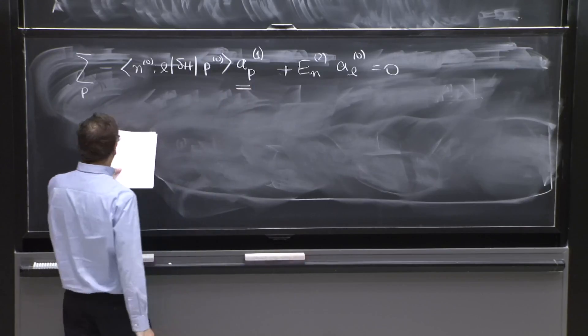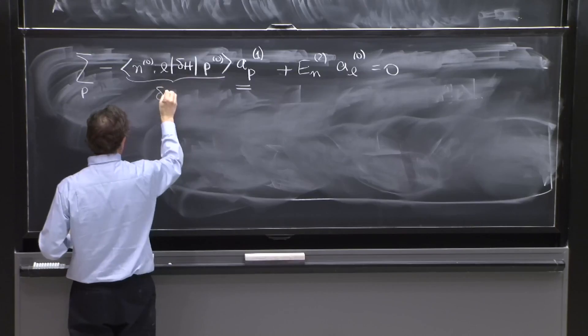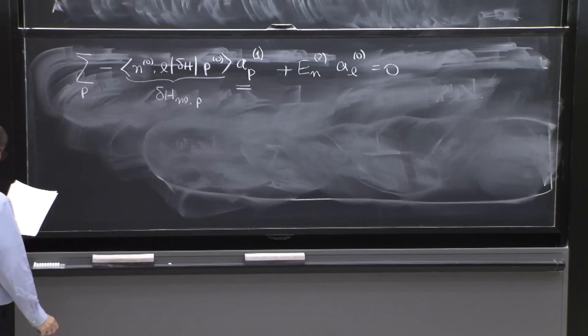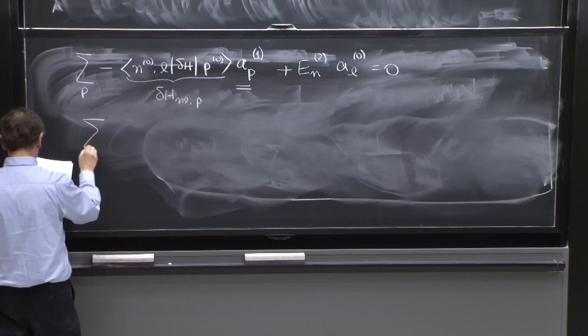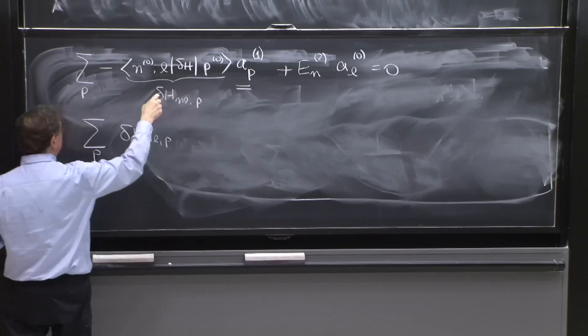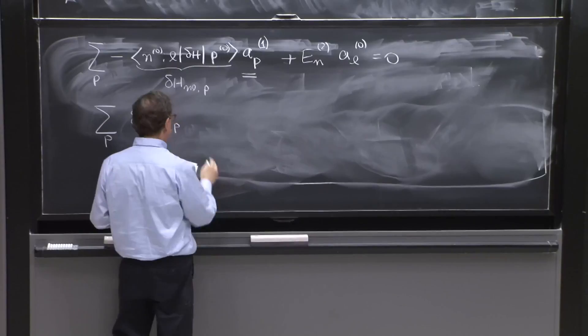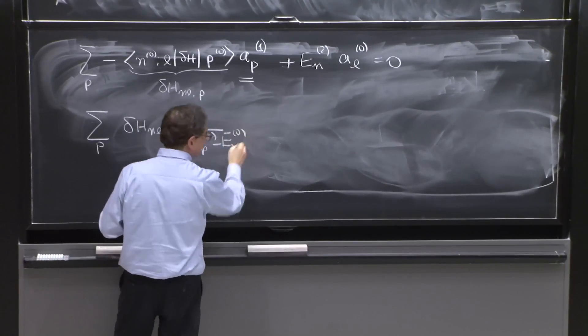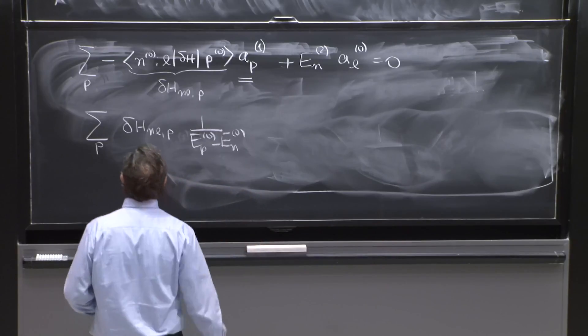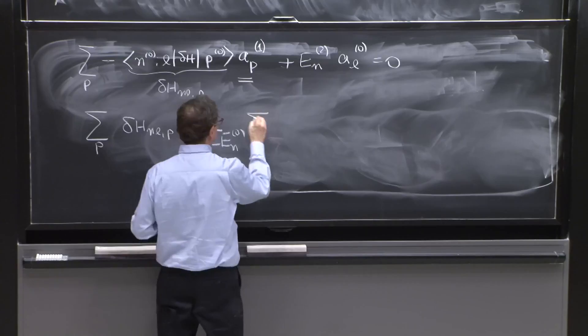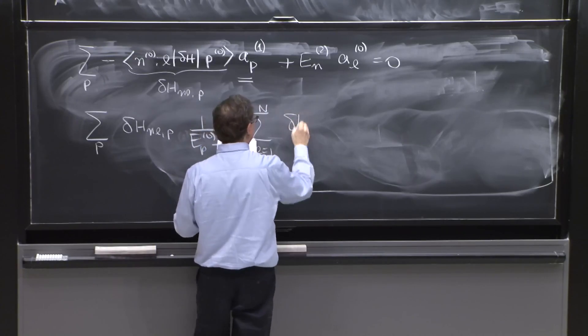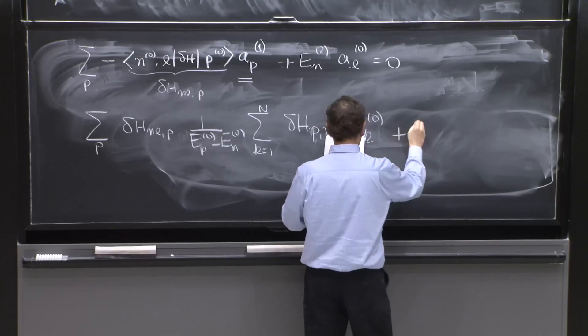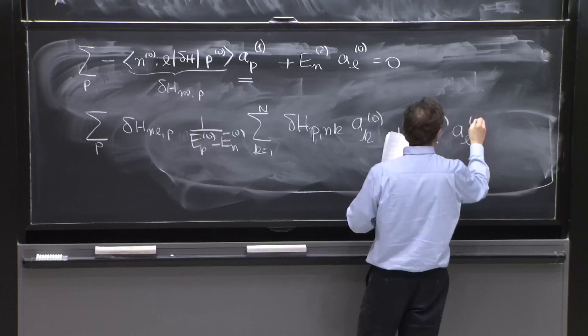So here it is. I'll copy this thing. I also can write this as delta H_nL,P. You recognize that thing. So this will be the sum over P of delta H_nL,P, the sign I will take care of it, times that thing over there, one over E_P^0 minus E_n^0. That's another minus sign that canceled this sign here. And I have here the sum over K equals 1 to n delta H_P,nK A_K^0 plus E_n^2 A_L^0 equals zero.